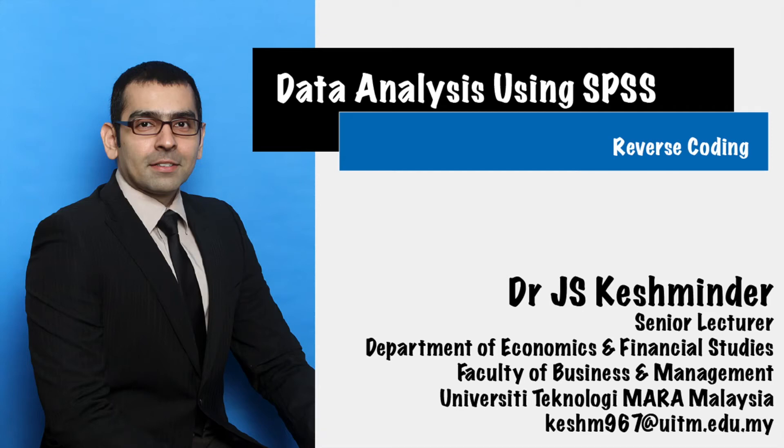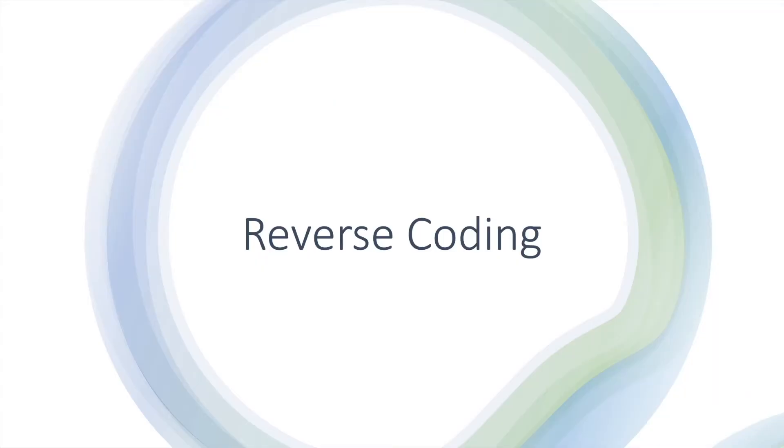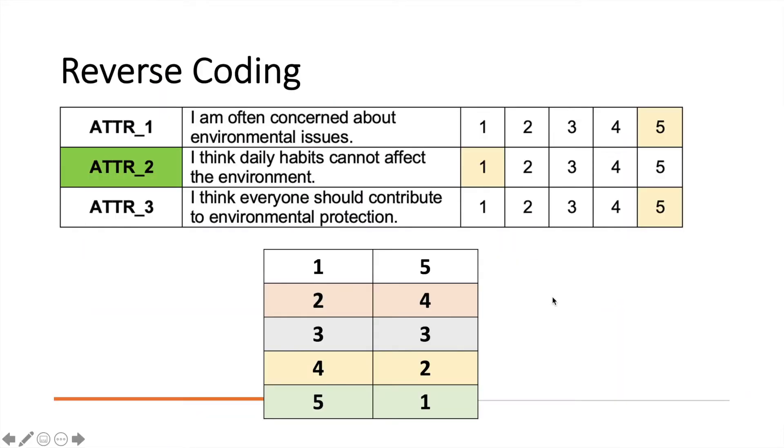In this segment of data analysis using SPSS, we'll be looking into reverse coding. So talking about reverse coding, this is what usually we have in our questionnaire. You'll have your Likert scale 1 to 5. So 1 will be strongly disagree and 5 will be you strongly agree.